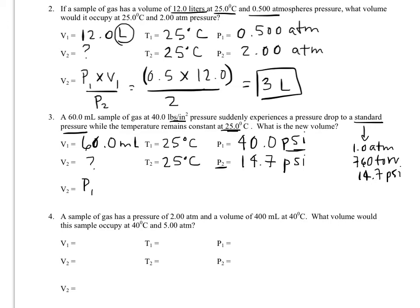So that tells us both our T1 and our T2, and they want to know the new volume. So again, same version of the equation. In your homework sometimes you'll be solving for maybe P2 or P1, you're not always going to solve for V2. So we've got 40 times 60 divided by 14.7.